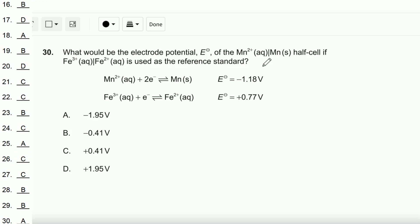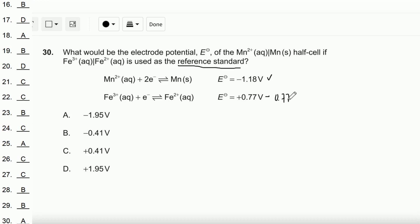Question number 30: What would be the electrode potential of the Mn²⁺/Mn half-cell if Fe³⁺/Fe²⁺ is used as the reference standard? Mn is more reactive than Fe, so its reduction potential should be negative relative to the Fe³⁺/Fe²⁺ reference. To calculate the electrode potential, you add the two values, giving −1.95 V. The answer is A.